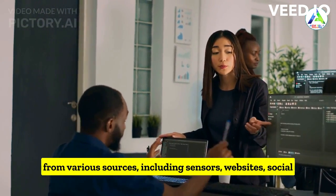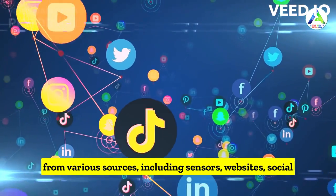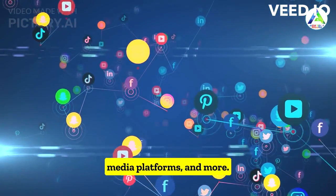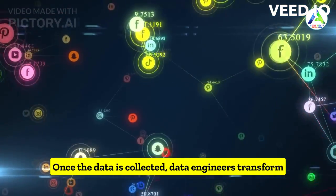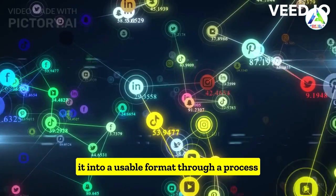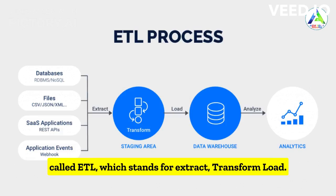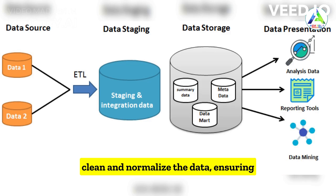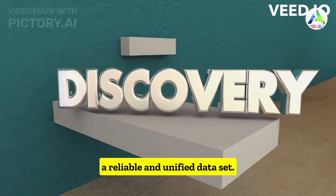Data engineers design systems that gather data from various sources including sensors, websites, and social media platforms. Once collected, they transform it into a usable format through a process called ETL, which stands for Extract, Transform, Load. During the transformation phase, data engineers clean and normalize the data, ensuring its accuracy and consistency.